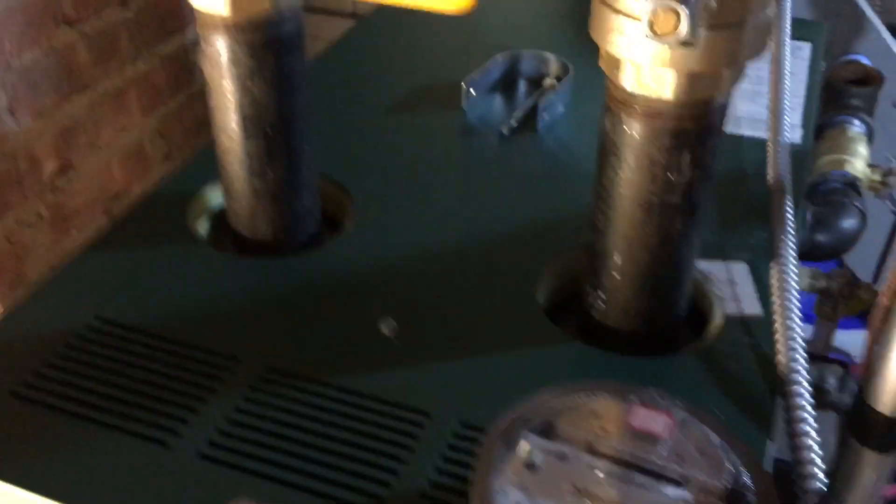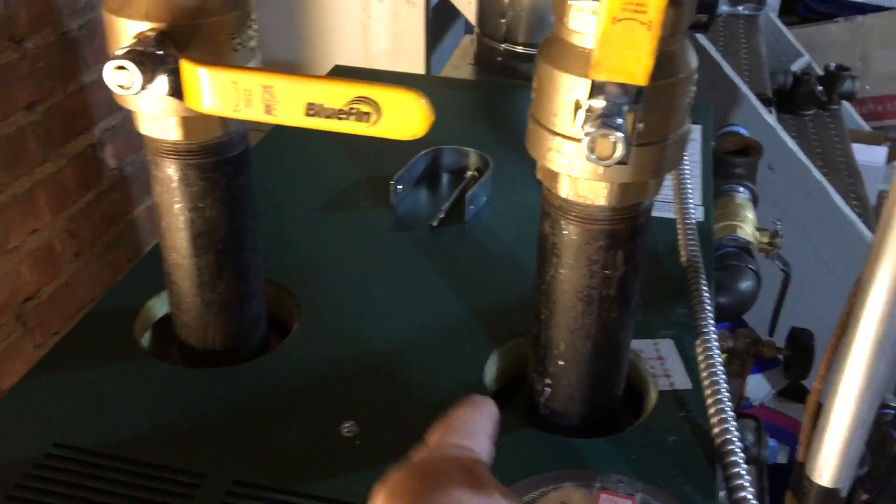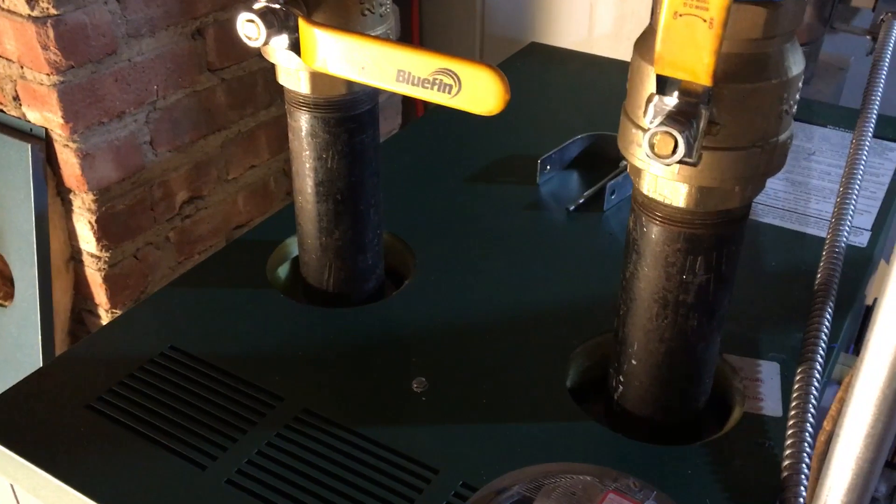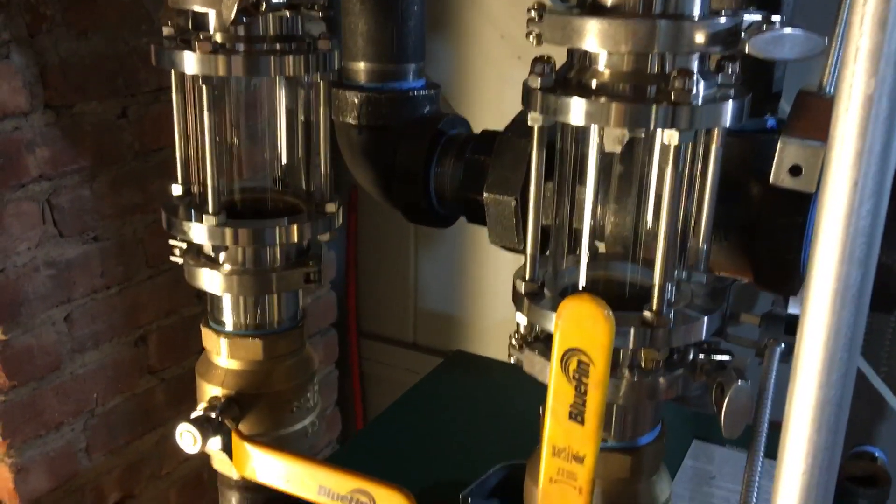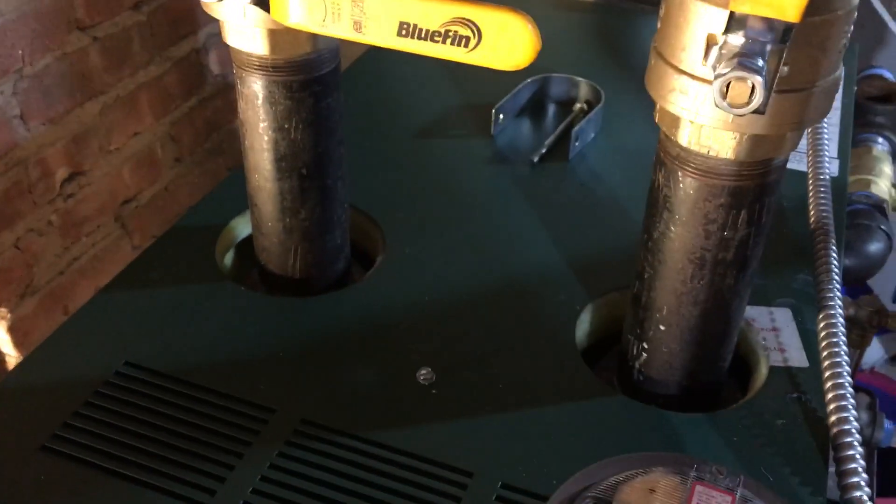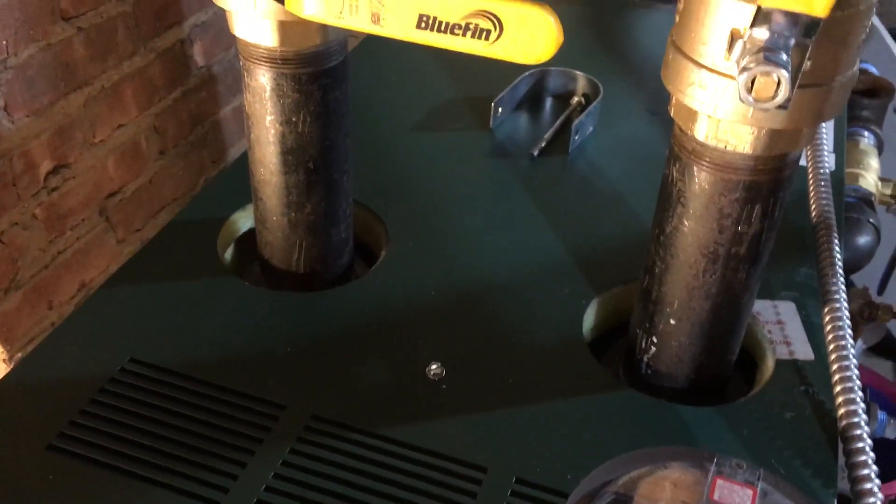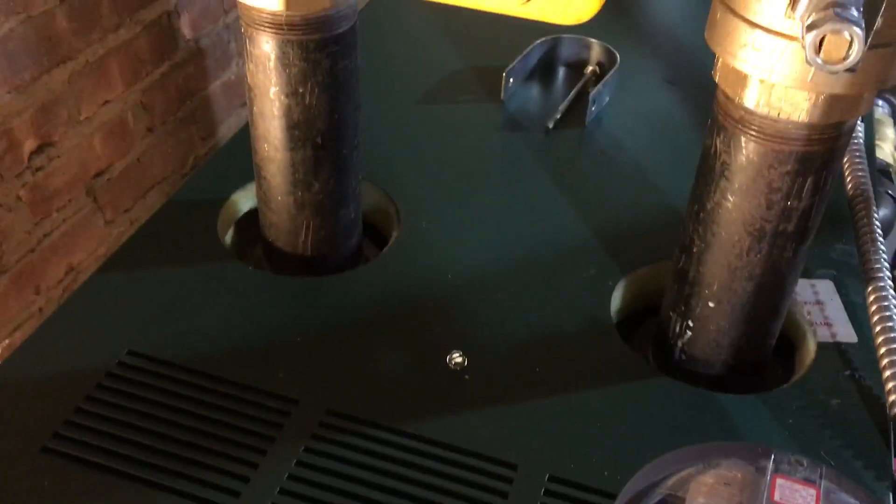Weil-McLain a couple years ago even stopped providing the dual supply lines on their mainline boilers - what is it, the EG - and people got really mad at them and so they brought them back. They still just have a single supply I understand on their Williamson lower tier brand, but I wouldn't hesitate to pipe one of these with the manufacturer specifications.